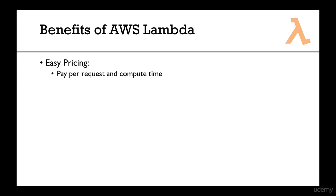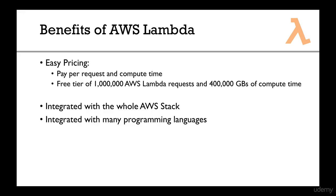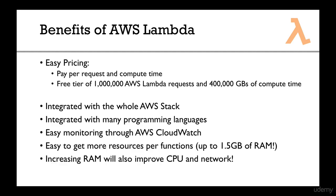There's really easy pricing. You pay for two things: requests and compute time. A request is when someone invokes your Lambda function. You have a free tier of 1 million AWS Lambda requests and 400,000 gigabyte-seconds of compute time. It's easy to monitor through AWS CloudWatch — the logs are directly in CloudWatch. It's easy to get more resources per function. You can scale from 128 megabytes of RAM up to 1.5 gigabytes, and if you increase your RAM you also improve CPU and network bandwidth performance. You scale one thing and everything else scales with it.